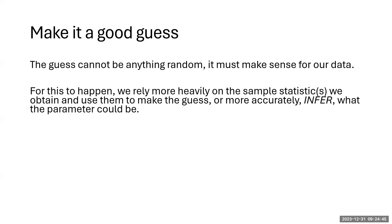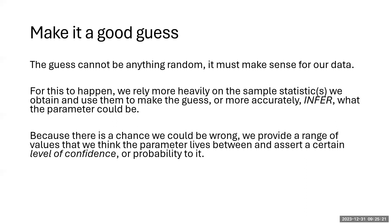We collect a sample, extract data from it, and do things with our sample statistics. We take the sample, we have our statistics in hand, and then we infer what the parameter could be — therefore we have inferential statistics. There is certainly a chance that when we make our inference we could be wrong. So what we do to give ourselves a little leeway is we give a range of values that we think the parameter is going to live between, and we assign to that interval a level of confidence.